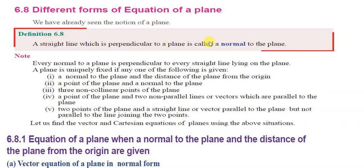We will see the definition of a normal. A straight line which is perpendicular to a plane is called a normal to the plane. This is a 2-mark definition — note it down.